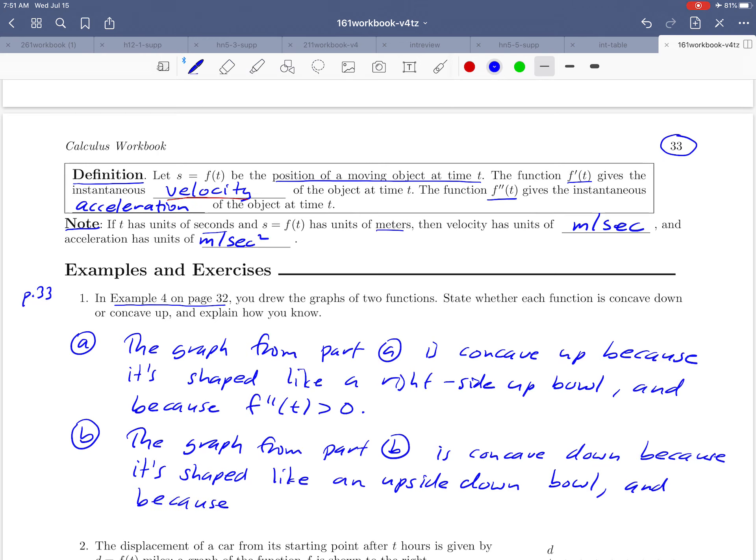Okay so it's concave down because it's shaped like an upside down bowl and because its second derivative is negative.